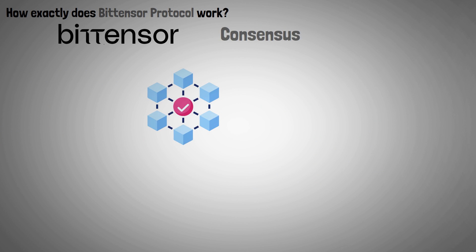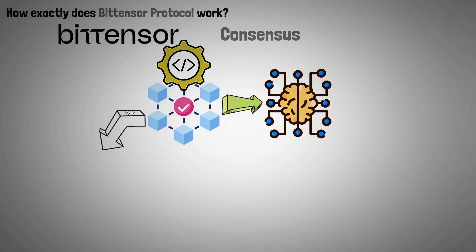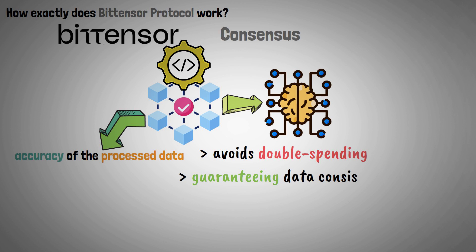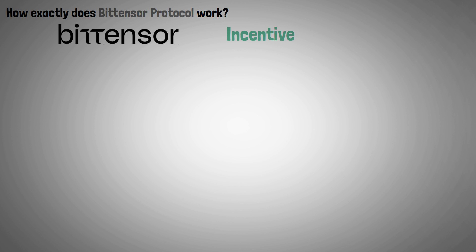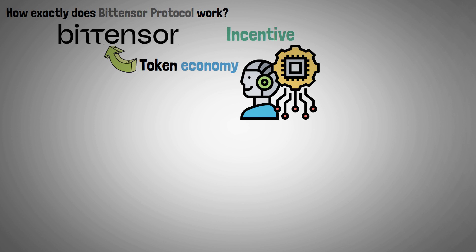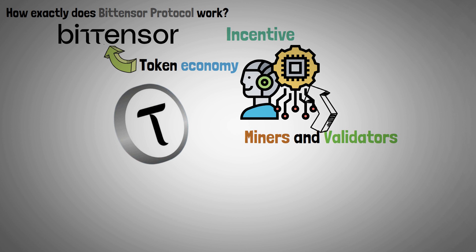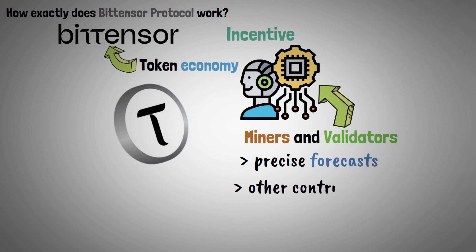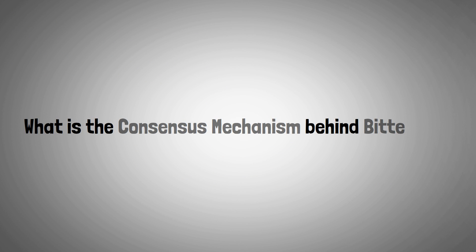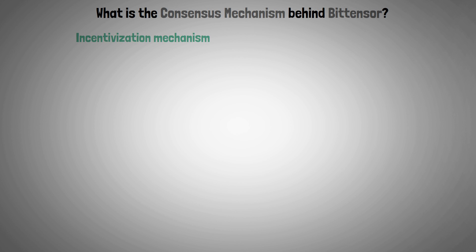Consensus: Consensus algorithms are used by the BitTensor network to decide on the network's current state and guarantee the accuracy of process data. It avoids double spending, guarantees data consistency, and preserves network security. Incentive: A token economy on the BitTensor network encourages involvement and contributions. Tokens are awarded to miners and validators for their computational power, precise forecasts, and other noteworthy contributions.